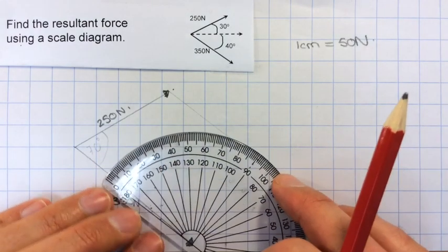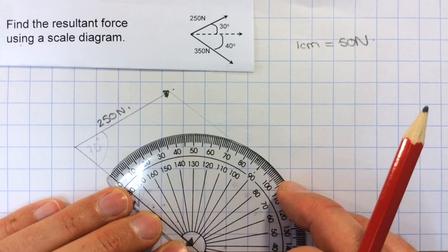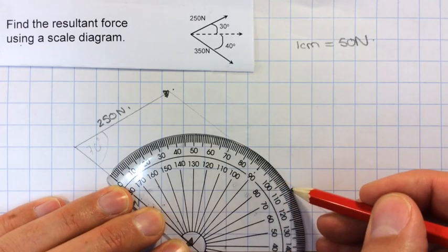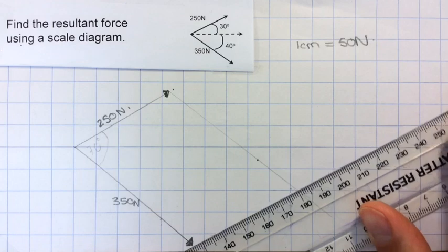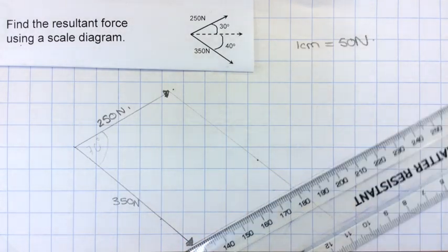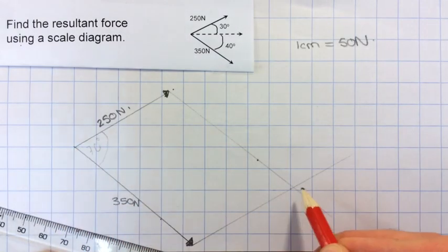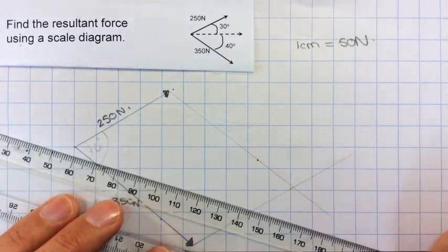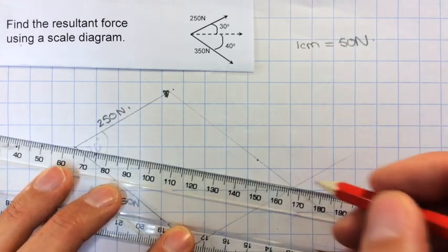And then similarly from the end of this one I can measure out 110 degrees and draw in a light line. Now my resultant force is from the very start to the other end of the parallelogram, which I can draw in carefully.